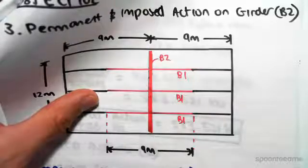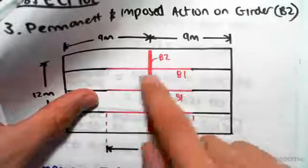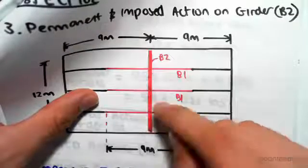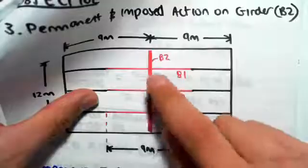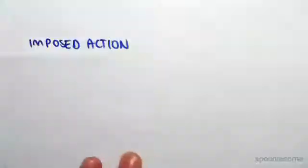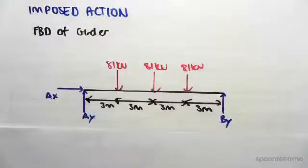Live load was taken by slab, transferred to joists. Now live load is in beam through point loads from the joists. So as a free body diagram, we have this situation here.